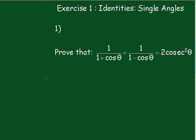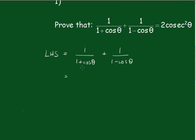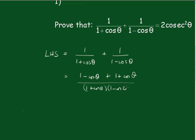Now the left hand side is equal to 1 over 1 plus cos theta plus 1 over 1 minus cos theta. Now putting this over a common denominator of 1 plus cos theta times 1 minus cos theta, you'll have a 1 minus cos theta up here, and a 1 plus cos theta up there, all over 1 plus cos theta times 1 minus cos theta.